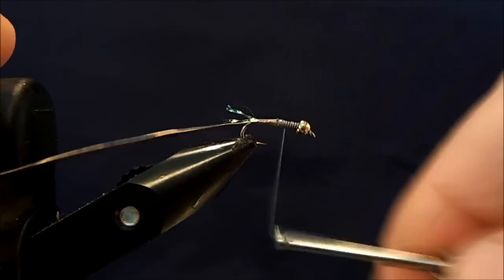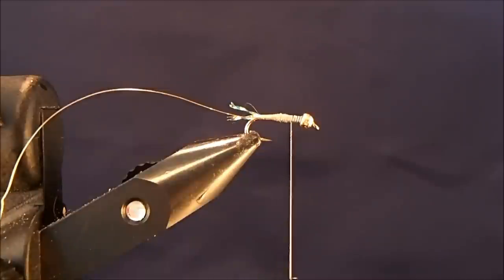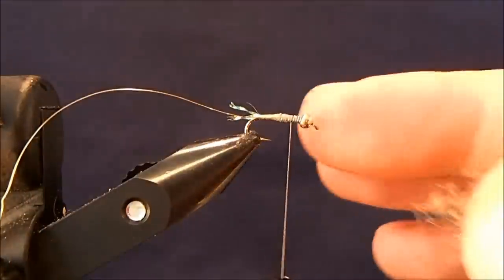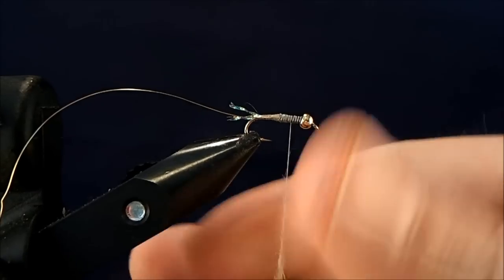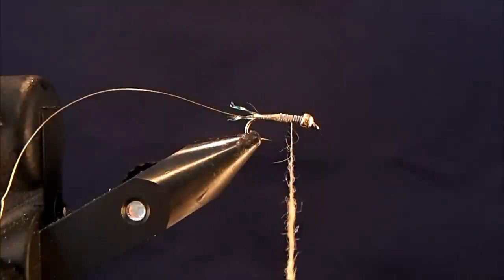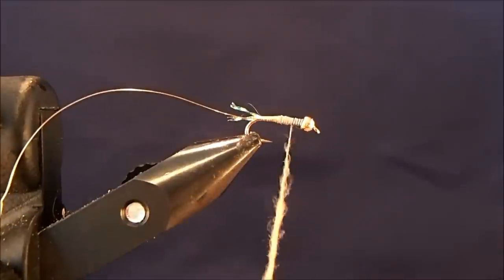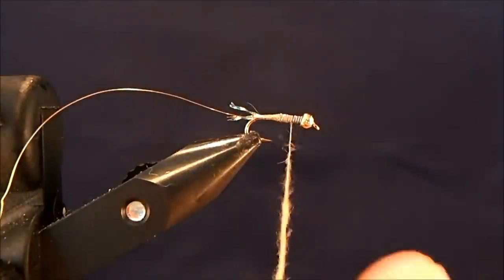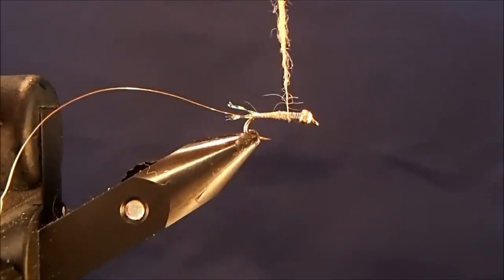And bring it back up to about the midway point of the fly. And now I can start to dub on my body. And for the dubbing, I'll use a natural and Antron blend, a golden stone. And I want to put just a nice taper of dubbing on this, on this hook. So I'm just getting it on the thread, and then I'll start making my wraps.